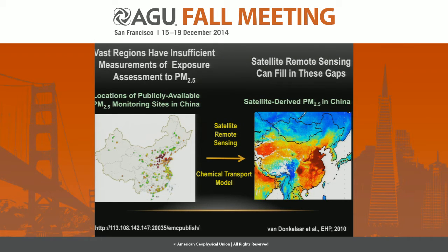We don't know the concentration there, and we can't assess the health impact there. That's why we want to have a map showing PM2.5 concentrations continuously all over China at every single place. Satellite remote sensing is the key solution because it provides continuous coverage that could perfectly overcome the spatial limitation of ground monitors.